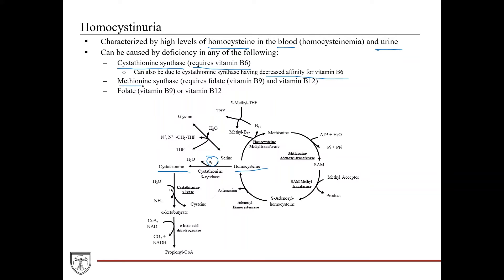You could also have a deficiency or mutation in methionine synthase, so that you can't generate methionine back from homocysteine. Since this enzyme requires vitamin B9 or vitamin B12, you can also develop homocysteinuria if you have a deficiency of folate (vitamin B9) or a deficiency of vitamin B12, since they're critical for methionine synthase function.